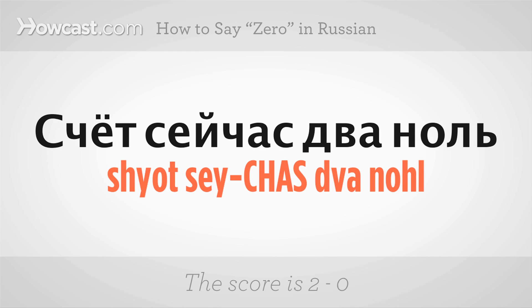Now, if for example you're watching a game and the score happens to be 2-0, a way of saying that would be: счёт сейчас два-ноль. We'll break that down word by word. The first word is сейчас, the second word is счёт — hitting the accent on the second syllable — the third word is два, and the last word is ноль. Putting it together: счёт сейчас два-ноль.